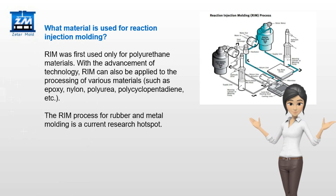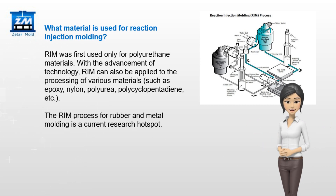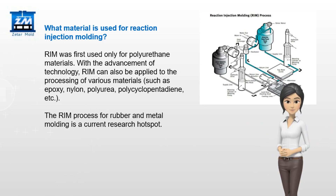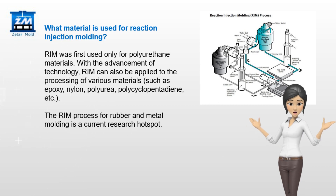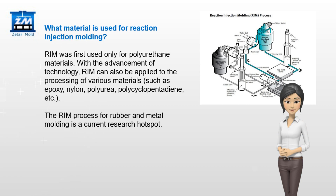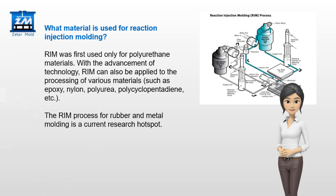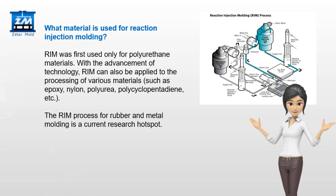What material is used for Reaction Injection Molding? RIM was first used only for polyurethane materials. With the advancement of technology, RIM can also be applied to the processing of various materials, such as epoxy, nylon, polyurea, polycyclopentadiene, and more. The RIM process for rubber and metal molding is a current research hotspot.